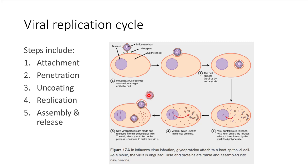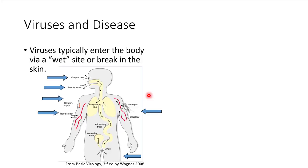That brings us to considering how viruses can enter the body. It turns out there are only really a few specific ways that viruses can gain entry — and this is kind of good news. Generally, viruses enter through a wet site, a site that has a mucous membrane, somewhere like your mouth. That's an easy place for a virus to gain entry. Most viruses cannot enter directly through your skin — your skin is a really good protective barrier. It doesn't really matter if you touch a dirty doorknob, as long as you don't have a cut; your skin will keep the virus particles out.